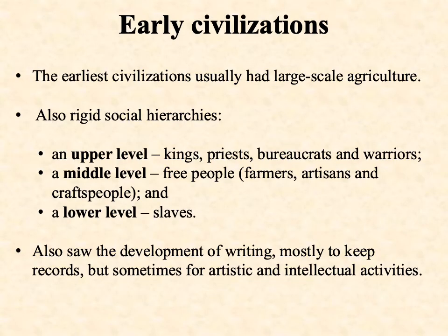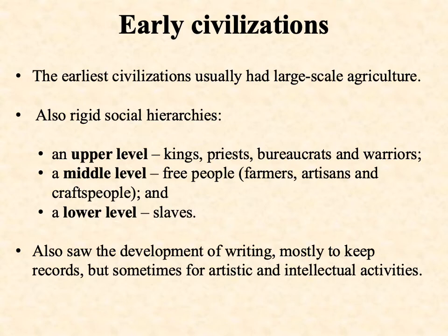Another way to think about what constitutes a civilization is to look at the early civilizations where there's really little debate that yes, this is a civilization. They share certain common elements. There's almost always large-scale agriculture as the economic foundation. In almost every case you have a rigid social hierarchy, often breaking down into three levels: an upper level with kings, priests, bureaucrats, and warriors; a middle level of free people mostly engaged in farming or artisanal crafts.